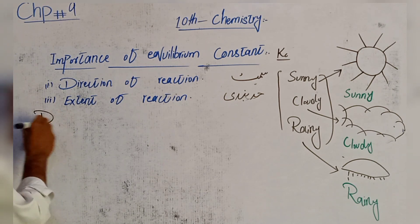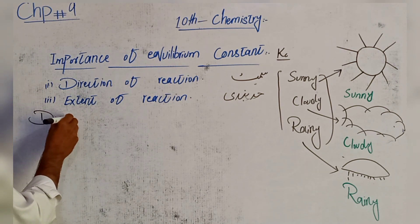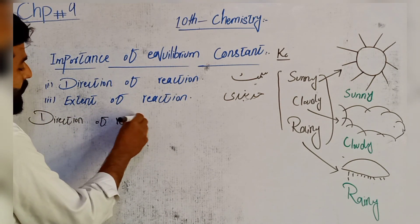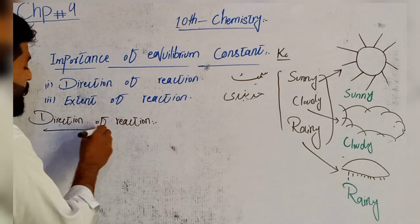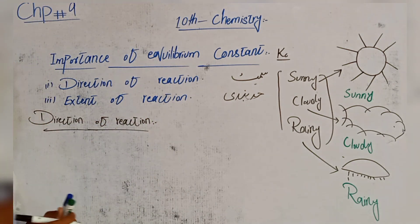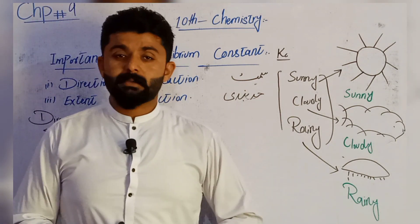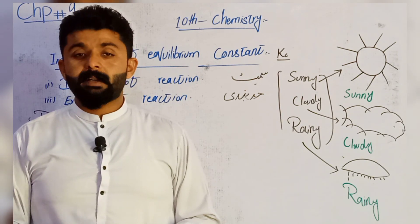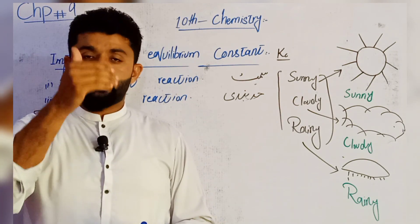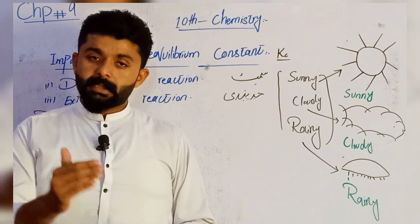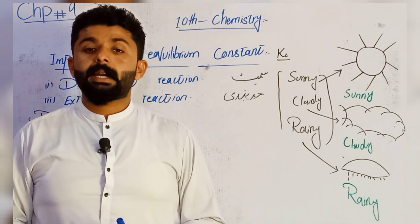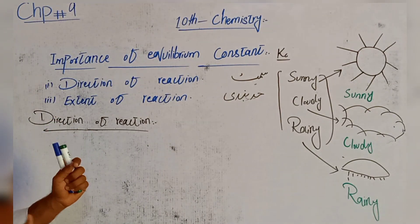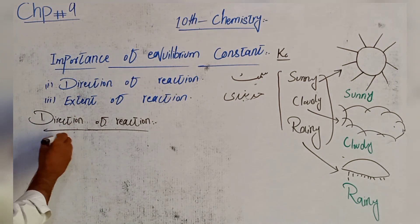Direction of reaction — ایک reaction کس طرف move کرتا ہے، اس کی direction کیا ہوتی ہے؟ جو reversible reaction ہوتا ہے اس میں دونوں directions ہوتی ہیں: forward direction بھی اور reverse direction بھی۔ Forward reaction میں تمام reactants مل کر products بناتے ہیں، اور products مل کر واپس reactants بنا دیتے ہیں۔